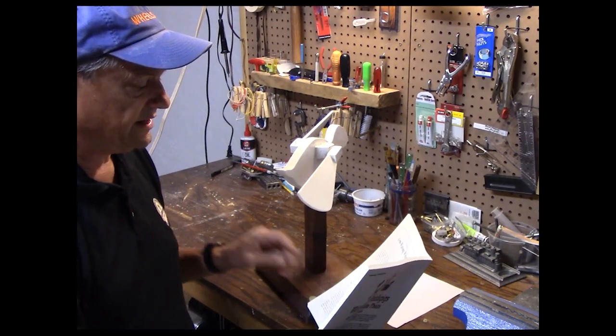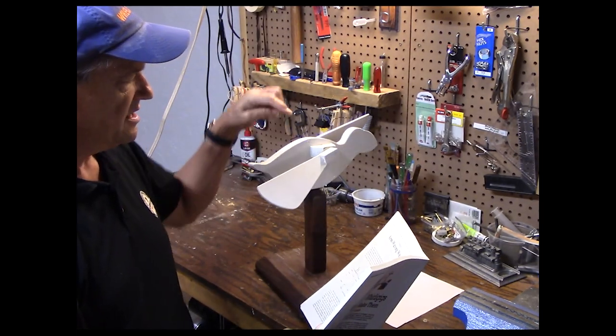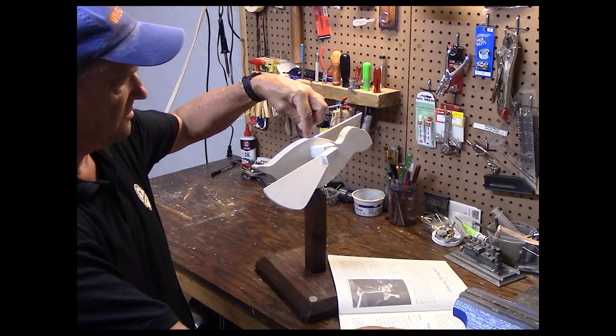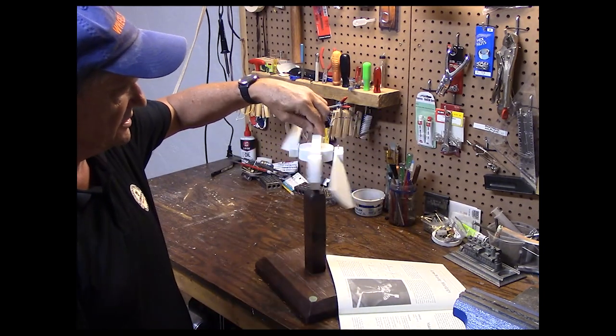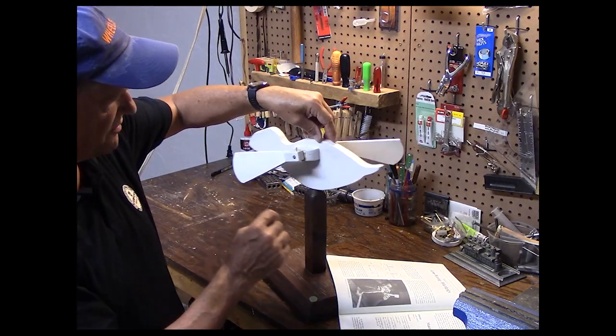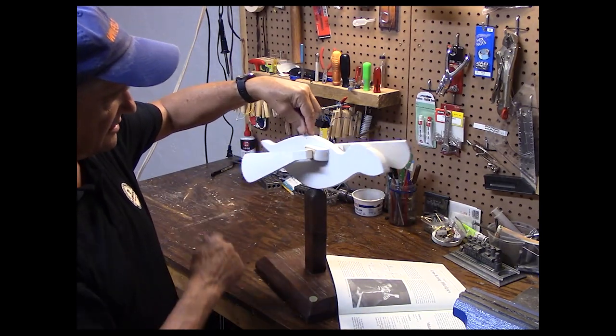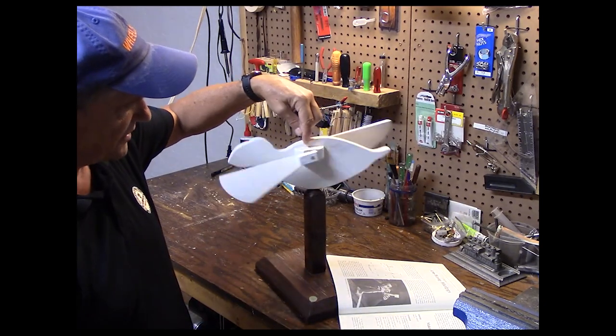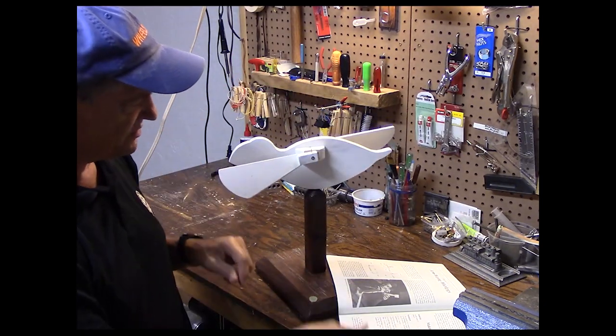If the hub is right over the pivot point, the body will tend to just continuously spin like this. Because one wing will catch the wind, spin it around, and then the next one will.